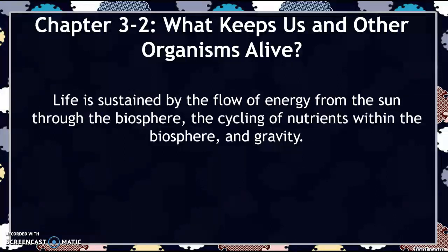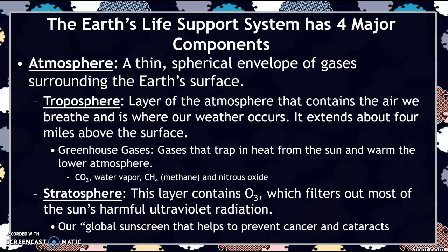There are four major components to Earth's life support system. The first of those components is the atmosphere. Our next unit, unit 3, we are going to go much more in depth into the atmosphere, but some basics you need to know for this unit: the atmosphere is a thin spherical envelope of gas that surrounds the Earth's surface. It's broken up into four to five layers. For right now I want you to know the troposphere, which is the layer of the atmosphere that contains the air we breathe and is where our weather occurs.